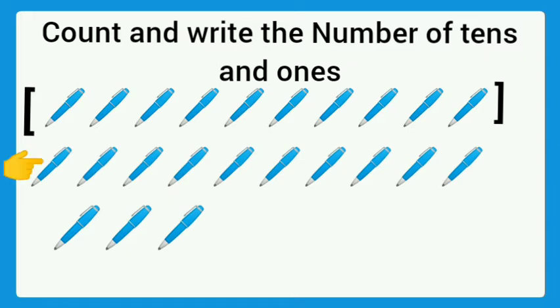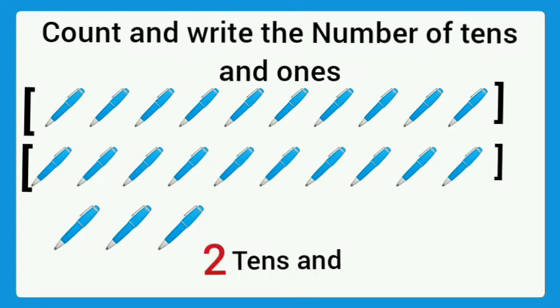Then second row: 1, 2, 3, 4, 5, 6, 7, 8, 9, 10. Then 10 pens. And next row: 1, 2, 3 pens. So 2 tens and 3 ones. The number is 23.